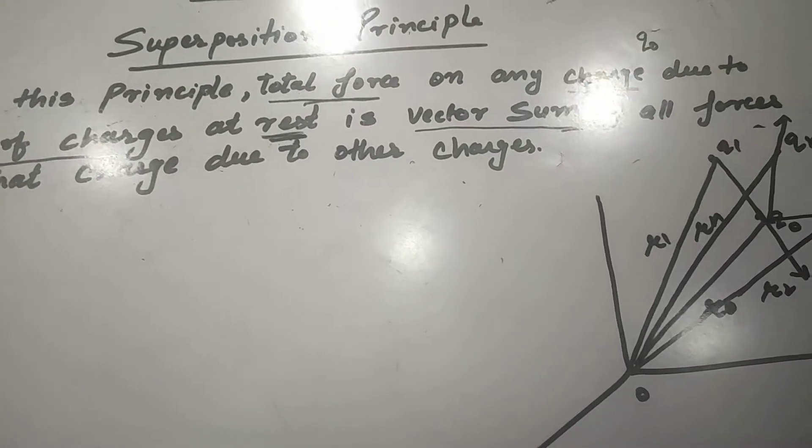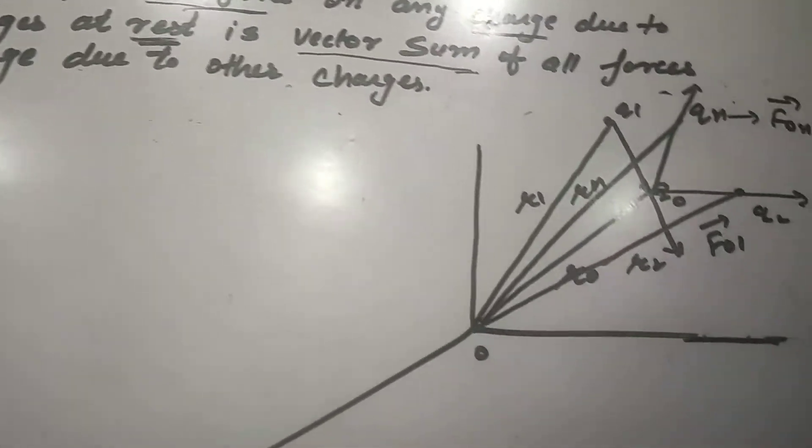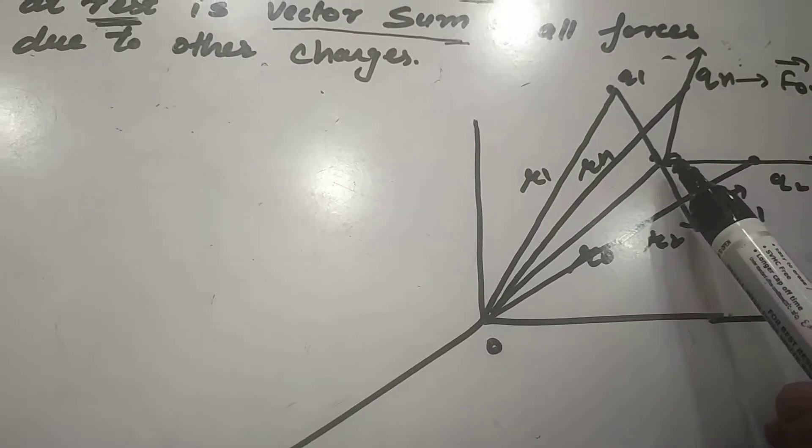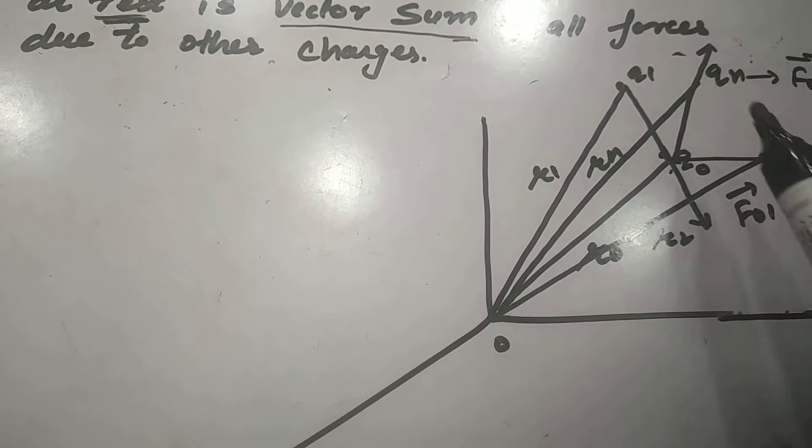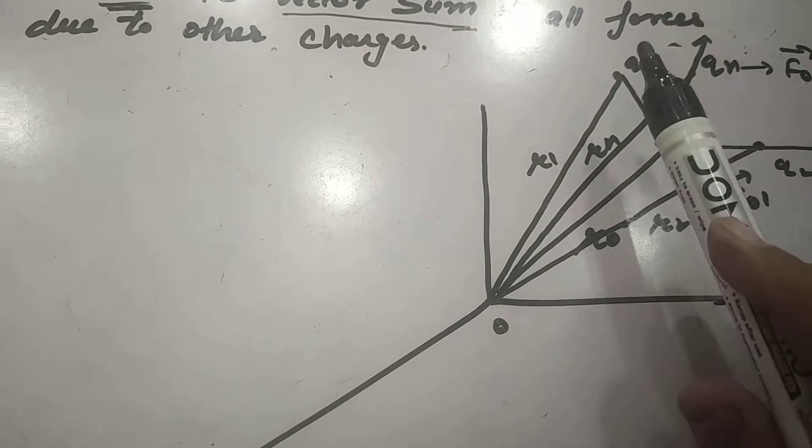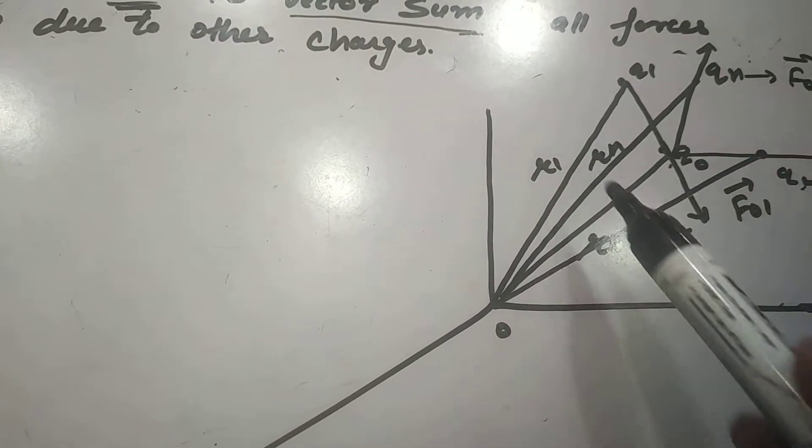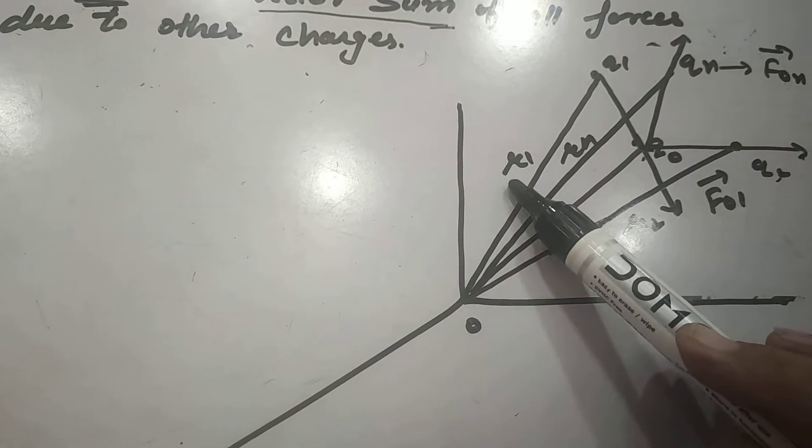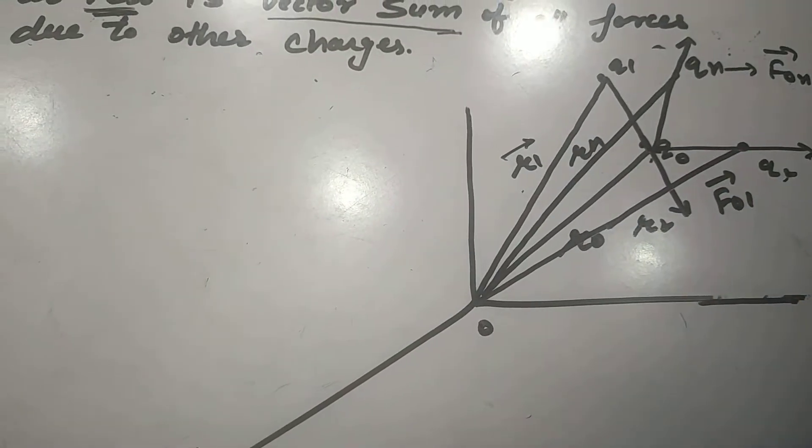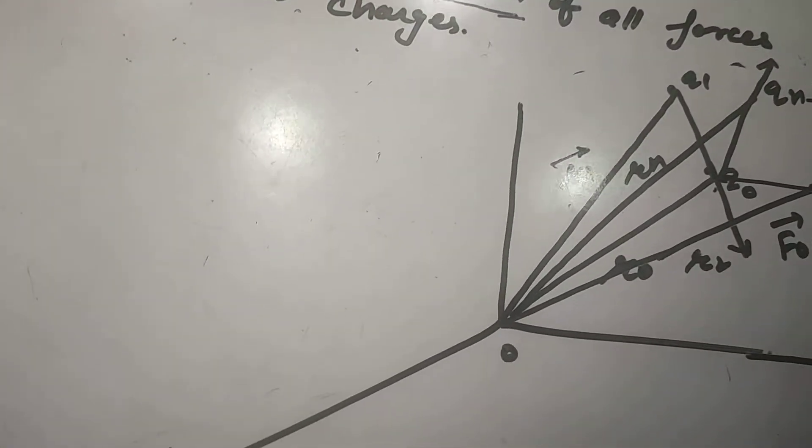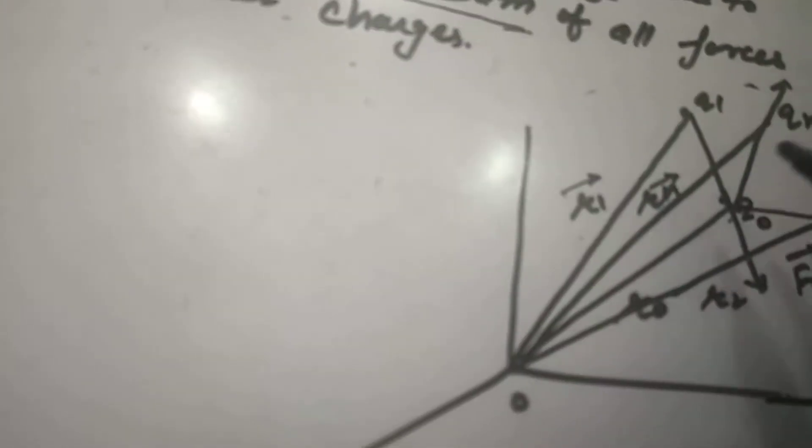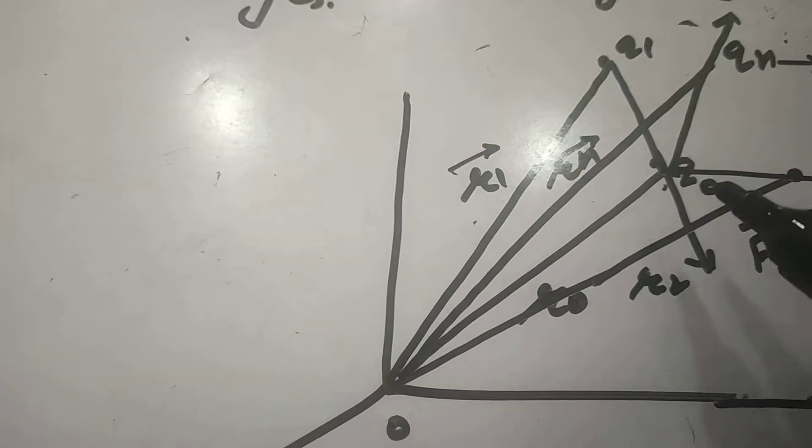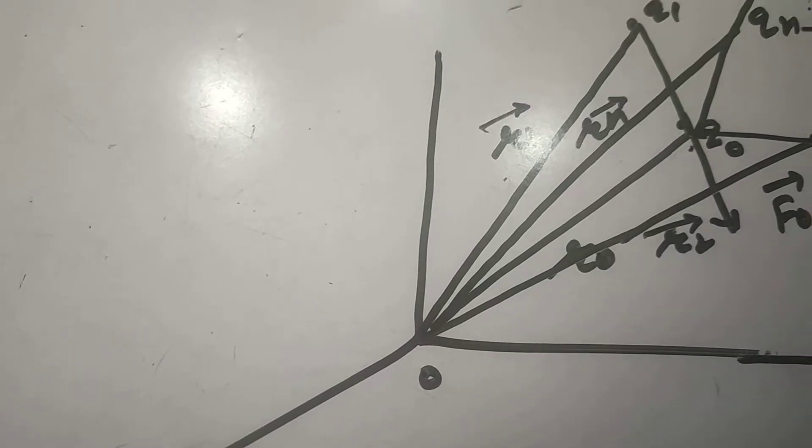Now let's have a look over the diagram. Here we are having charge q naught and charges q1, q2, qn are placed in the vicinity of this charge. r1 vector is the position vector of charge q1, rn vector is the position vector of charge qn, r2 vector is the position vector of charge q2.